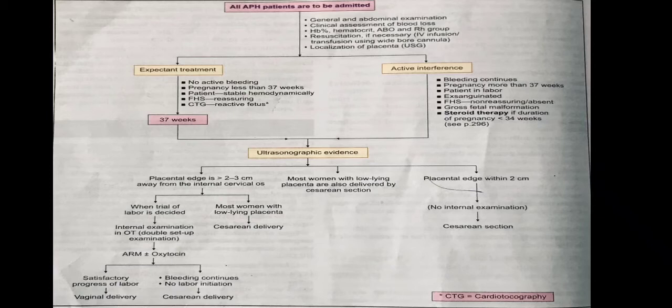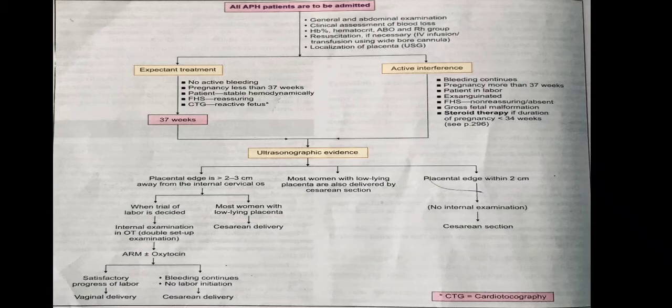Expectant treatment aims to advance the pregnancy to 37 weeks. It is only done in selective cases: no active bleeding, pregnancy less than 37 weeks, the patient is stable, fetal heart rate is reassuring, and cardiotocography (CTG) is reactive. If the pregnancy is less than 34 weeks, give steroid therapy with betamethasone to reduce the risk of respiratory distress in case of preterm labor.